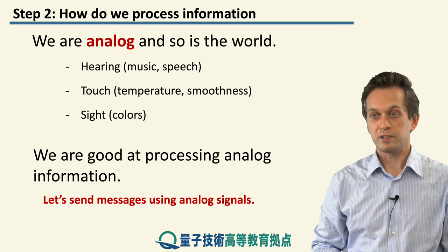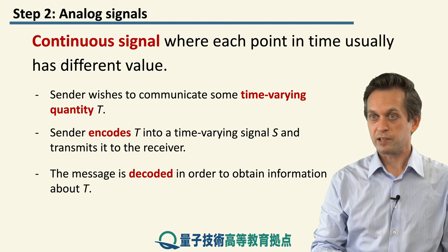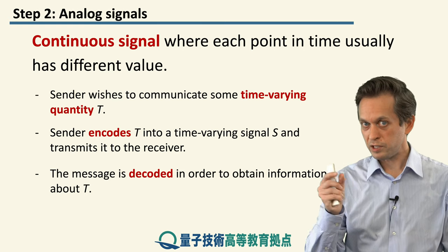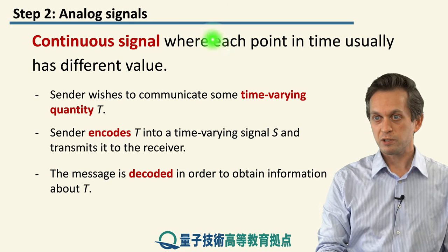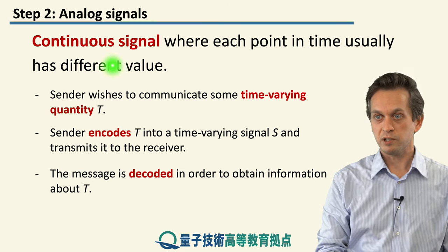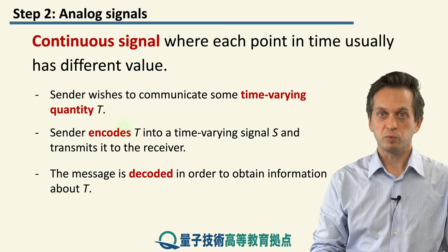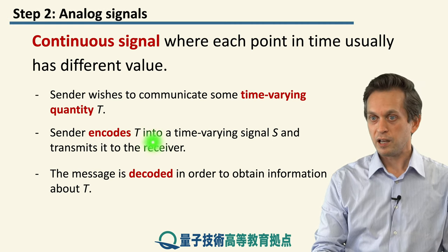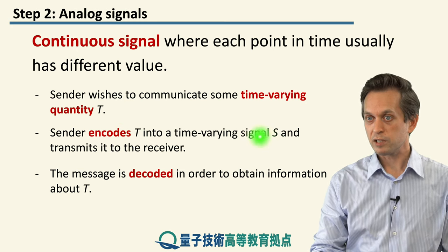So let's try to send messages using analog signals. Formally, an analog signal is a continuous wave that varies over time smoothly, and the value at each point in time carries some meaning of the message. The sender wishes to encode this continuous signal. They have some time-varying quantity T — it could be temperature, it could be music, it could be anything.